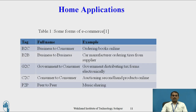This table shows some forms of e-commerce. There are five types. The first is B2C — Business to Consumer — for example, ordering books online. B2B — Business to Business — can be used for car manufacturing, such as a manufacturer ordering tires from suppliers.